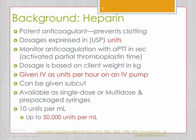As a brief review: heparin is used to prevent clotting and is a potent anticoagulant. Dosages are expressed in units. Laboratory work can be done to check for therapeutic ranges, and the dosage can be based on weight. It is given IV as units per hour on an IV pump, but we won't concentrate on that now — focus your studies on subcutaneous administration. It is available as a single-dose or multi-dose vial, and single doses come in pre-packaged syringes.